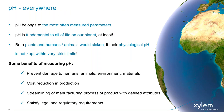pH is really everywhere. It belongs to the most measured parameters on the planet — after probably weight and temperature — making it likely the third most measured parameter. pH is fundamental to all life on our planet: plants, humans, animals. If the physiological pH is not within very strict limits, life fails. Examples of benefits of measuring pH include preventing damage to humans, animals, and the environment, cost reduction in production, streamlining manufacturing processes, and satisfying legal and regulatory requirements.